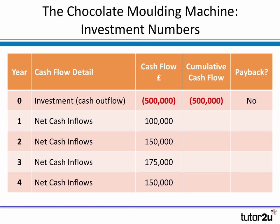Have we reached payback? Well, clearly not, because there have been no inflows yet on this project. So we have to keep a running total to see where we're at with the cash flows. In year one, we get £100,000 in, so our cumulative total is therefore minus £400,000. And again, we've not yet reached payback.